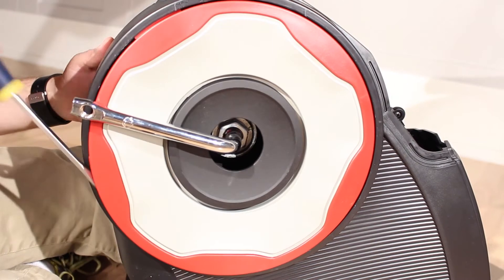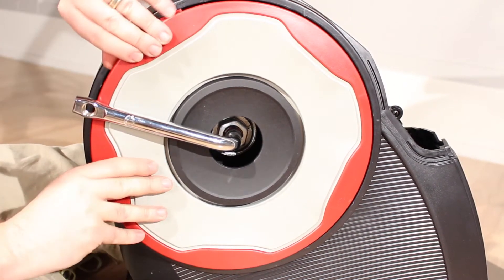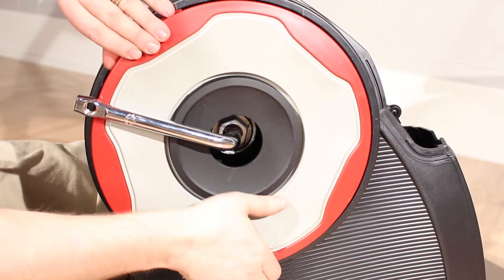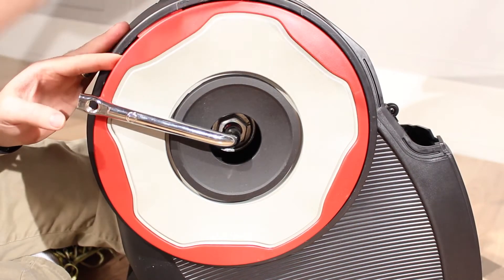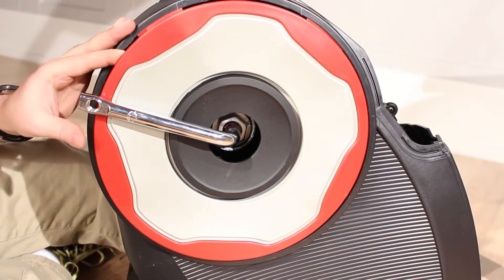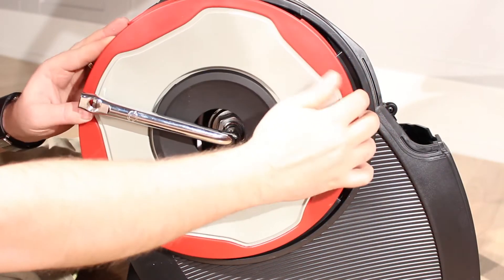Using the same flathead screwdriver, gently pry off the pedal disc and slide it off over the crank arm. Though not shown here, now is the time to also remove the right-hand pedal and pedal disc.